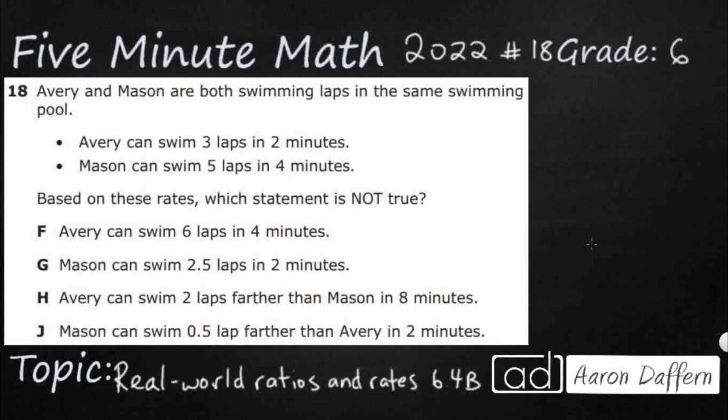Hello and welcome to 5-Minute Math. Today we are looking at the 6th grade concept of real-world ratios and rates. This is Standard 6.4b in the great state of Texas, and we are using item number 18 of the 2022 released STAR test. If you have not done so already, please go ahead and take a moment to pause the video, work this problem out on your own, unpause it, and we will look at our answers together.